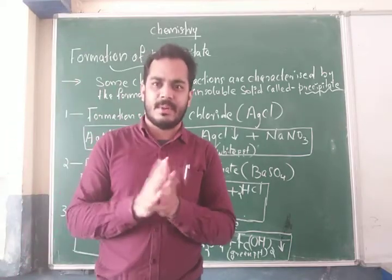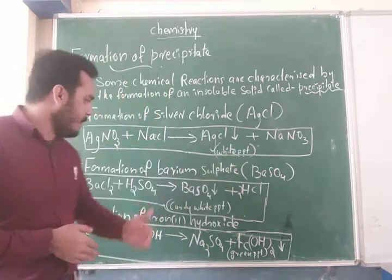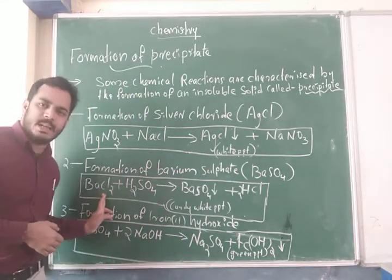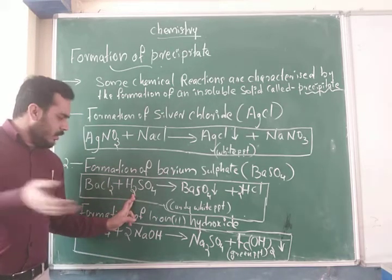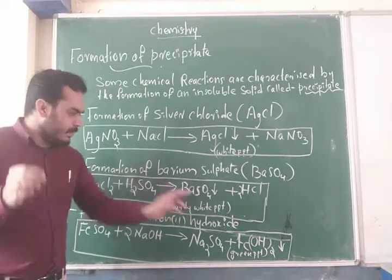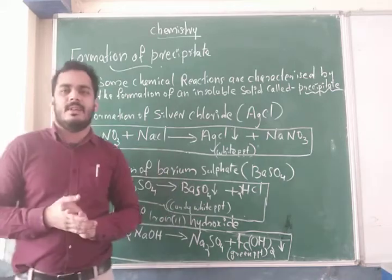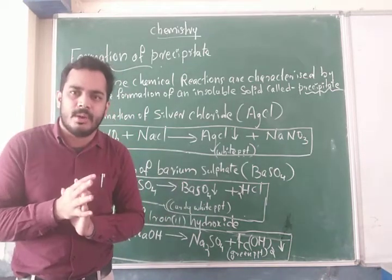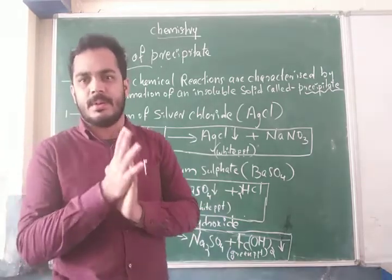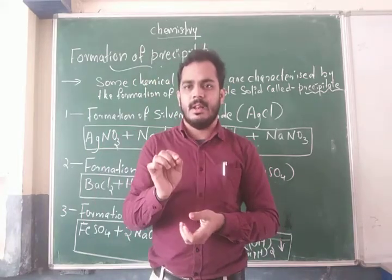In this chemical reaction, the color of the precipitate is clearly white precipitate. Now the second one: formation of barium sulfate, BaSO4. The reactant is barium chloride and dilute sulfuric acid. These react to form barium sulfate — that means barium sulfate is an insoluble solid, that is a precipitate. One more product also formed is hydrochloric acid, HCl. The color of the barium sulfate precipitate is curdy white precipitate.